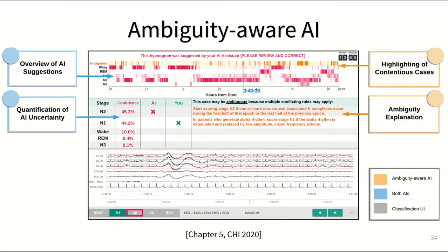To test this, we used a Wizard of Oz approach, meaning that instead of building an actual predictive model, we pretended to have an AI with this kind of ability by taking disagreement information and structured arguments from our dataset of real-world expert discussions, and by overlaying that information on top of output from a conventional machine learning model.